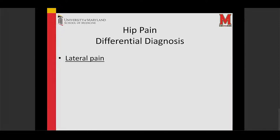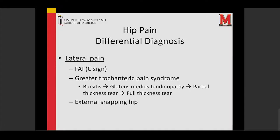For lateral pain — out on the side — most commonly around the greater trochanter, FAI sometimes gives you pain on the side, but it's slightly less common. More common are things related to the greater trochanter there, which we now lump into a term called greater trochanteric pain syndrome. It used to be thought that it was just bursitis on the side of the hip, but that's not really true — it's not just bursitis.